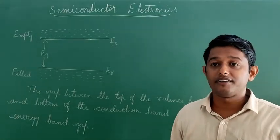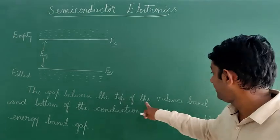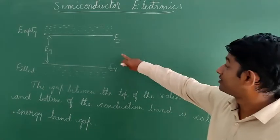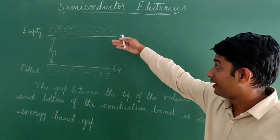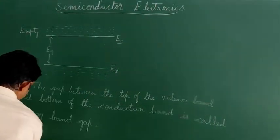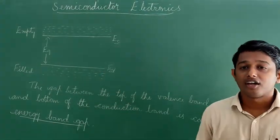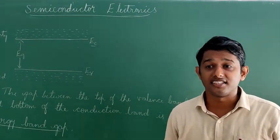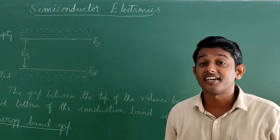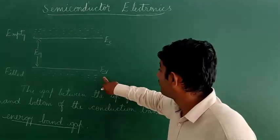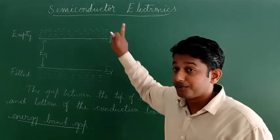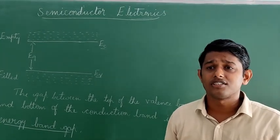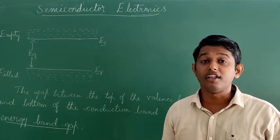The gap between the top of the valence band and the bottom of the conduction band is called the energy band gap. The conduction band is above, the valence band is below, and the gap between them is the energy band gap. When a valence electron gets sufficient energy, it gets excited to the conduction band. The energy band gap E-G may be large, small, or even zero depending upon the material.